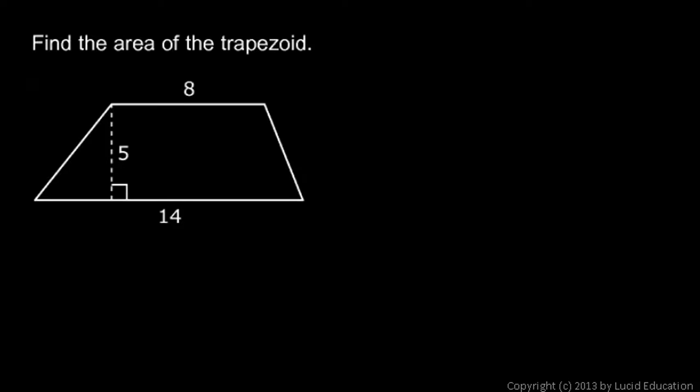And here's an example, and this is just a straightforward application of the formula for the area of a trapezoid. The area is the average of the bases times the height, and we have here a base of 8 and a base of 14 and the height of 5.